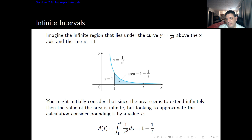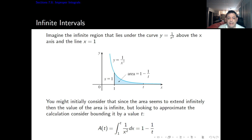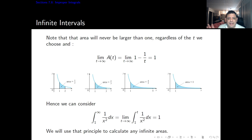The area of that bounded piece is given by the integral from 1 to t of 1 over x squared dx. When we compute that, we get 1 minus 1 over t. One thing you can realize from this is that the maximum of the area is going to be 1. As we move t more and more to the right, or make t go to infinity, we realize the area approaches 1. You can also see that from these pictures.